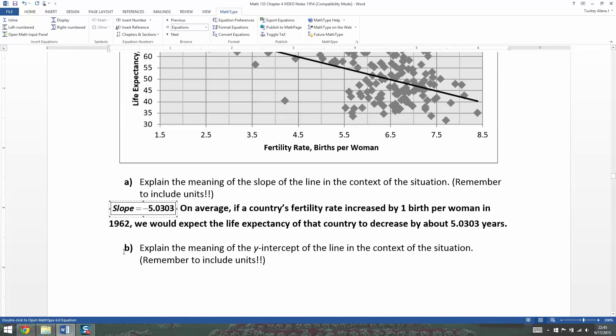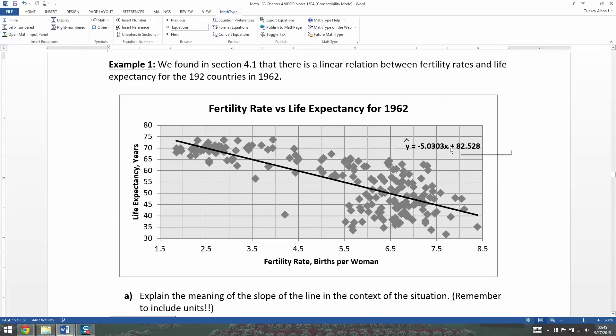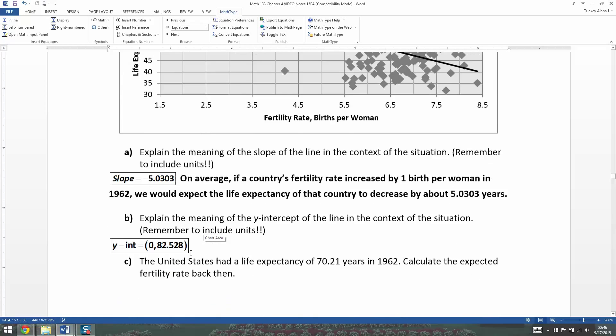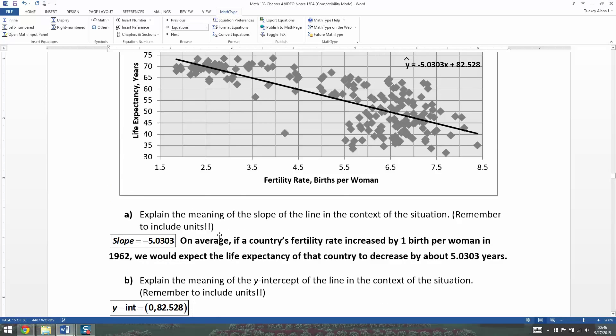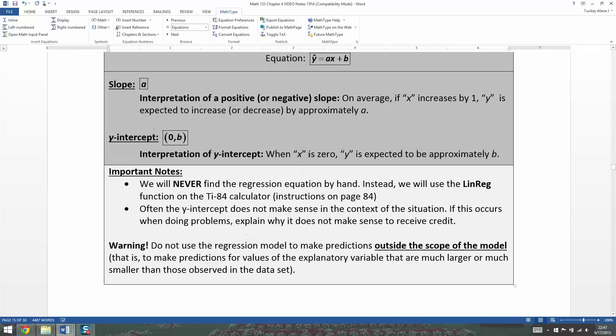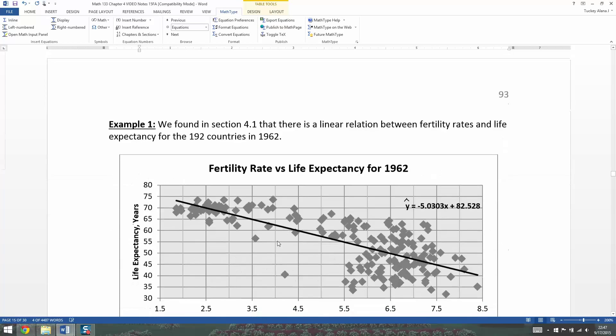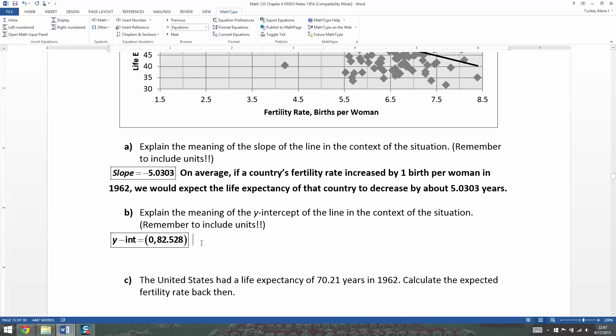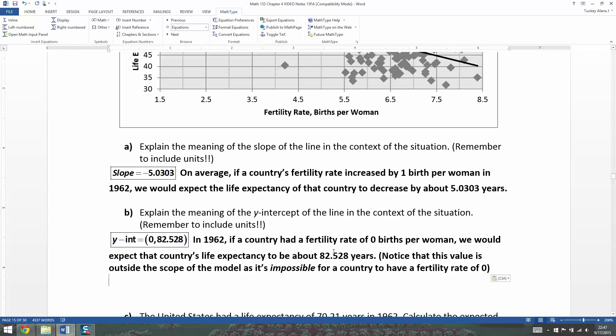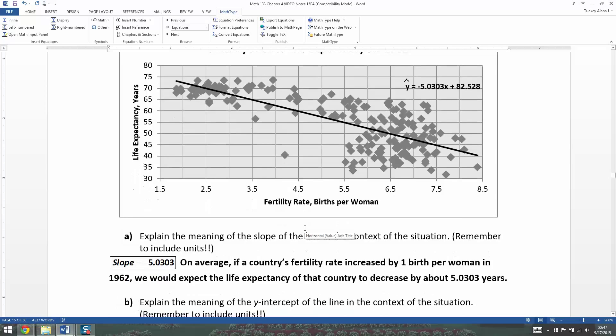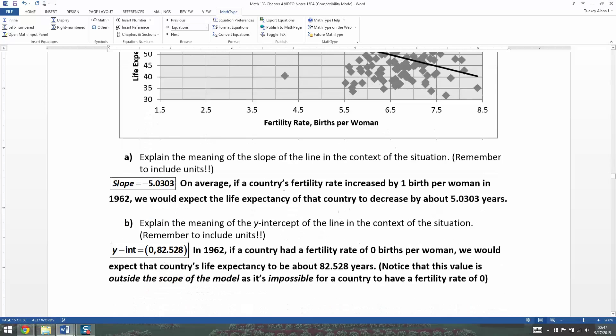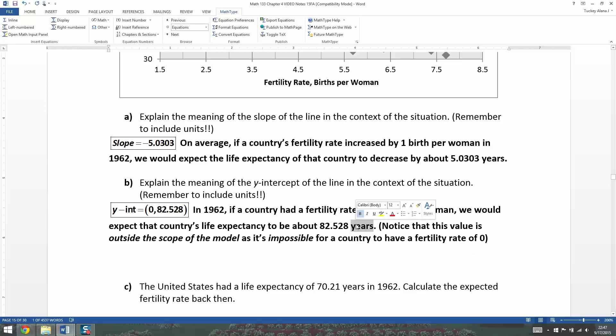Now what about the y-intercept? Well, the y-intercept is 0 comma b, which in this case would be 0 comma 82.528. There's the y-intercept right there. Now the question is, what does that mean? So remember what it says up here, if x is 0, then the y is expected to be approximately b. So if you had a fertility rate of 0, you'd expect your life expectancy to be about 82.528. Now realize that makes no sense at all. You could never actually have a country with 0 fertility rate, right? That's impossible. So this is definitely outside the scope of the model because it's impossible to actually have a country that low. Our lowest birth rate is at the 1.6 or so range. But nevertheless, we've explained it and we included units, years and births per woman.